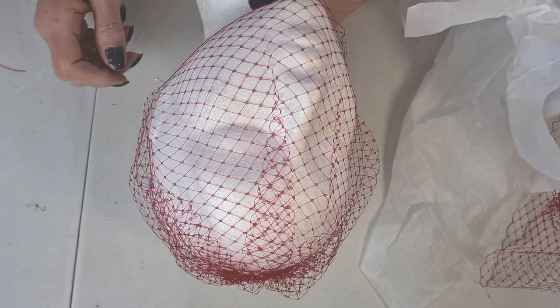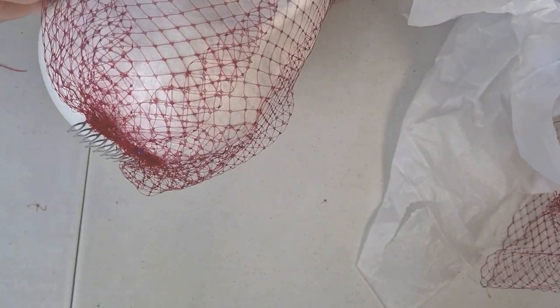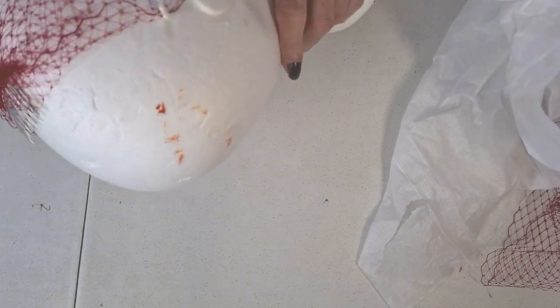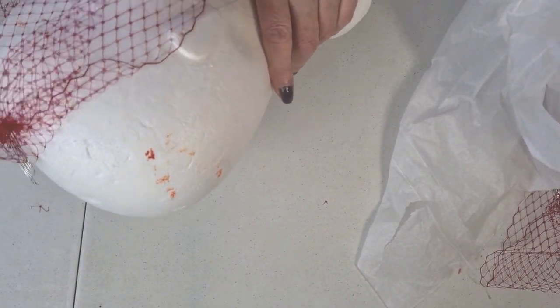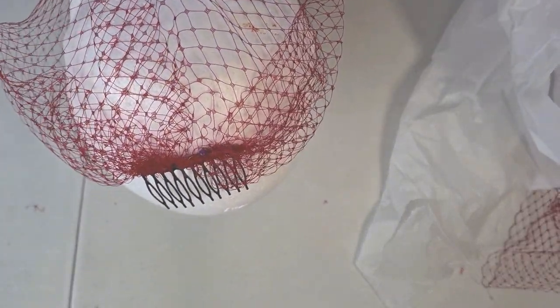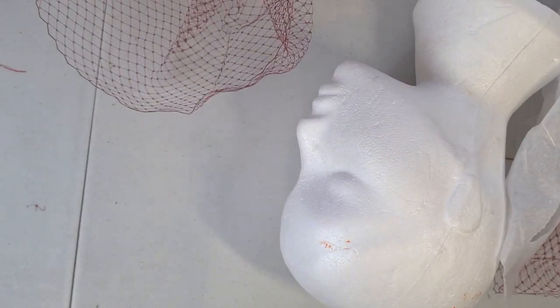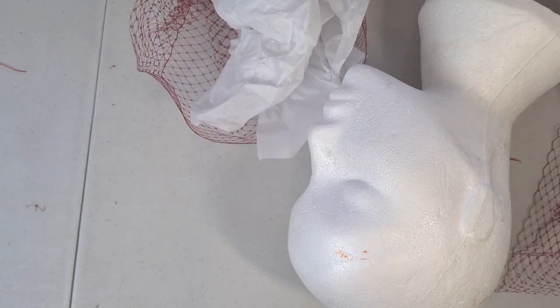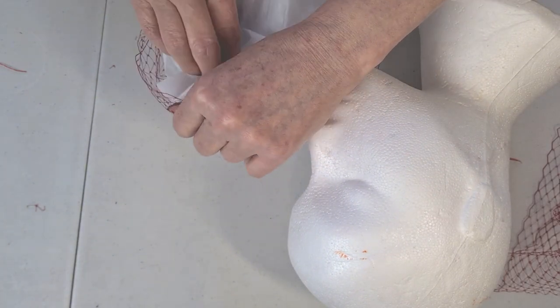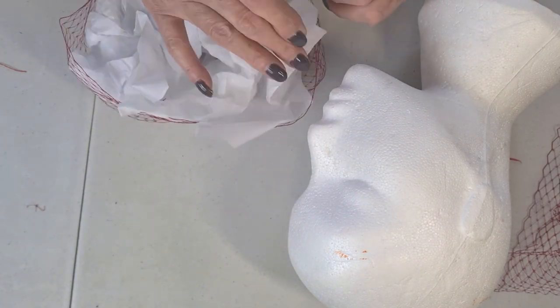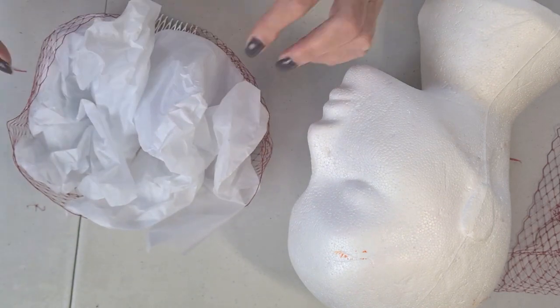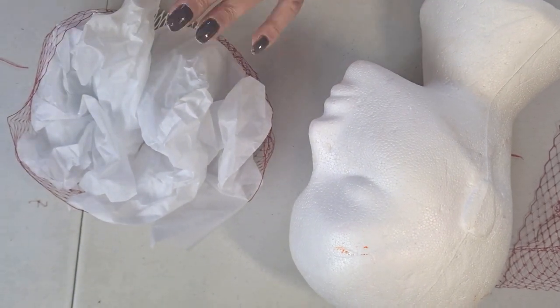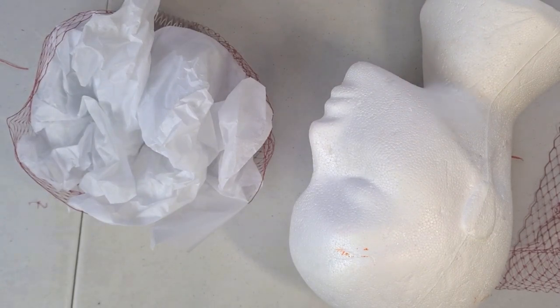When you block a veil it isn't going to keep its shape unless you pad it out, so for transport or storage the best thing to do is once you've done your veil and you take it off your block, you pack it with tissue like this so that you can keep the shape that you've gone to all that trouble to make. So pack it with some tissue and store it like that and it'll keep its shape. Otherwise what will happen is you'll put it in a box and it'll all go flat and you'll have to steam it every single time you use it.